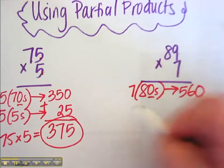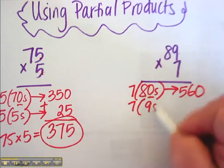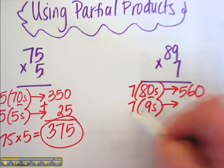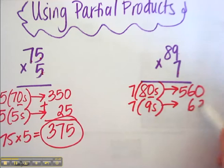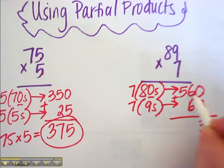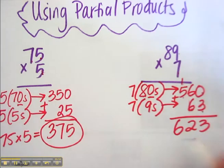Next I have 7 nines. Arrow 7 times 9 is 63. Notice how I'm aligning my digits. 0 plus 3 is 3. 6 plus 6 is 12. Carry the 1. And 623 is my answer for that. So far so good.